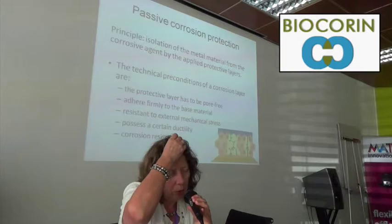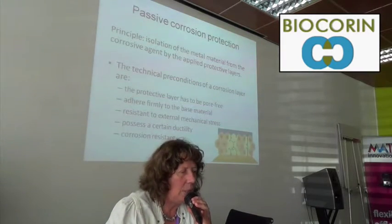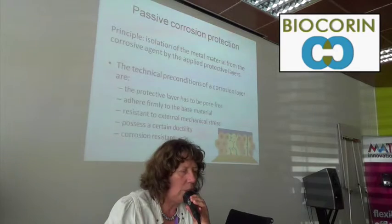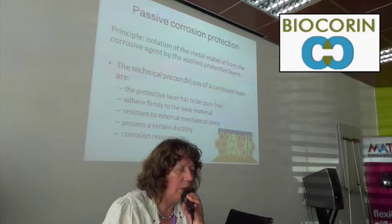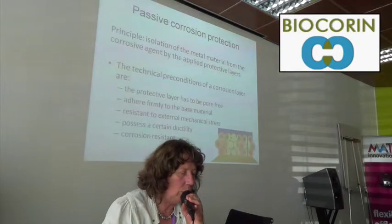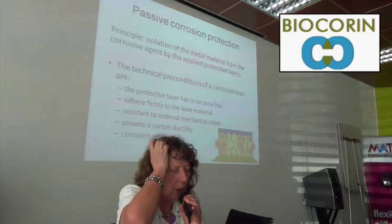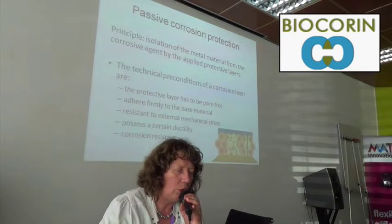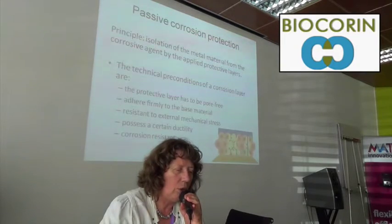The passive corrosion protection is about making a barrier between the metal and the environment. There are many technical preconditions for a corrosion protection layer: it has to be pore-free, adhere firmly to the base material, be resistant to external mechanical stress, possess certain ductility and be corrosion resistant. Especially the creation of pores is very important, because through a pore, water and dissolved salts can reach the surface of the substrate, thus causing serious corrosion problems.